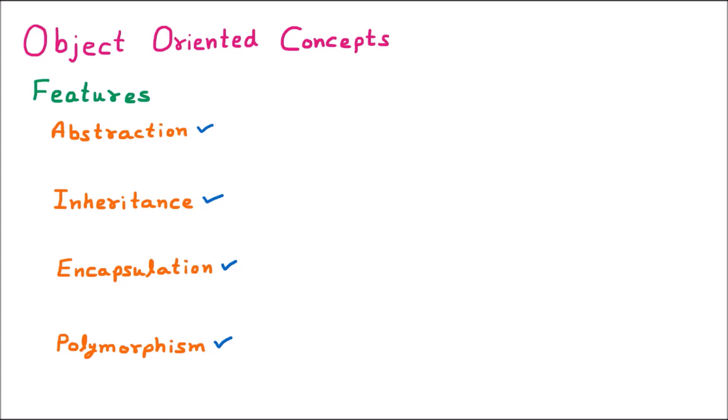Let us suppose we are having a car. If I am going to purchase this car, the person should only have information about where the steering wheel is and how it works, where the brakes are, and what the other controls are. We are not aware of the wirings — how the clutch pedal is connected, how the steering works. These things are not required by the user.